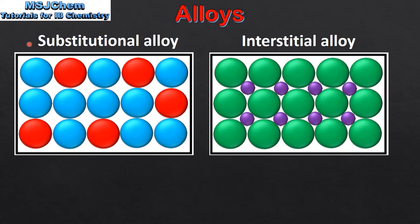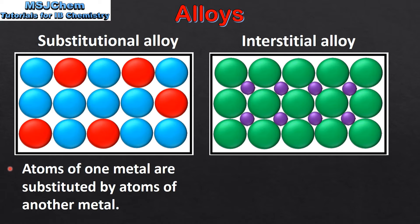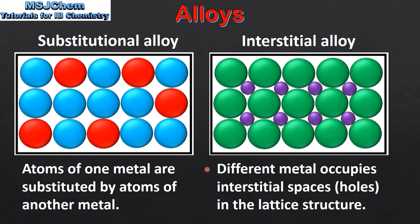Next we look at two different types of alloys. On the left we have a substitutional alloy, and on the right we have an interstitial alloy. In a substitutional alloy, atoms of one metal are substituted by atoms of another metal. In an interstitial alloy, a different metal occupies interstitial spaces or holes in the lattice structure.